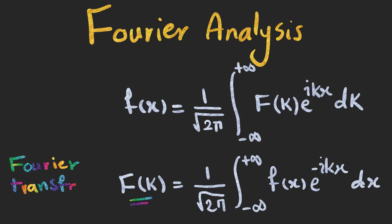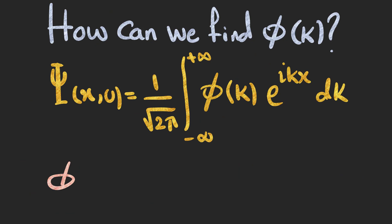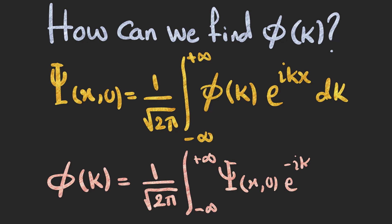f of k is called the Fourier transform of f of x, and f of x is the inverse Fourier transform of f of k. So, we can find phi of k by calculating this integral.